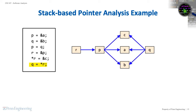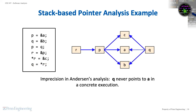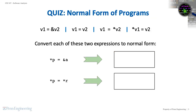Any further iterations will not result in additional updates to the points-to relationships. Anderson's analysis is sound but incomplete. An example of the kind of false positive it can produce is the points-to relationship q arrow a — in a concrete execution of this C program, q can only point to b or c at any given program point, but never a.